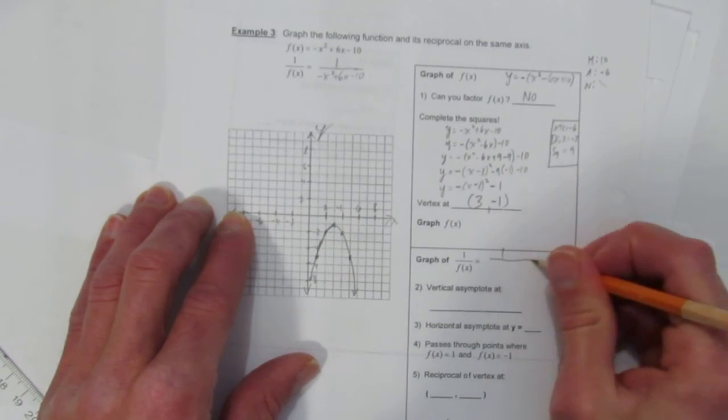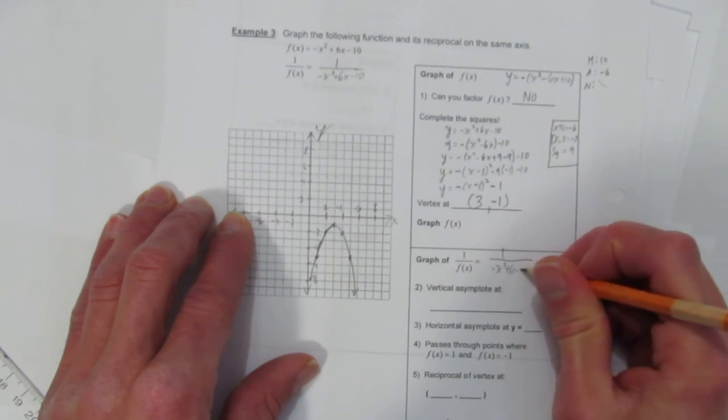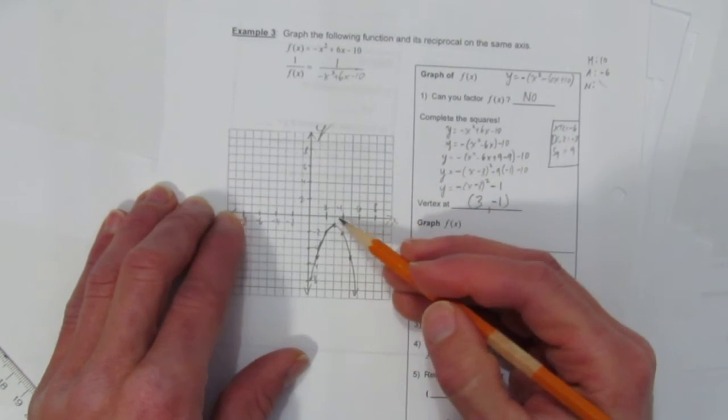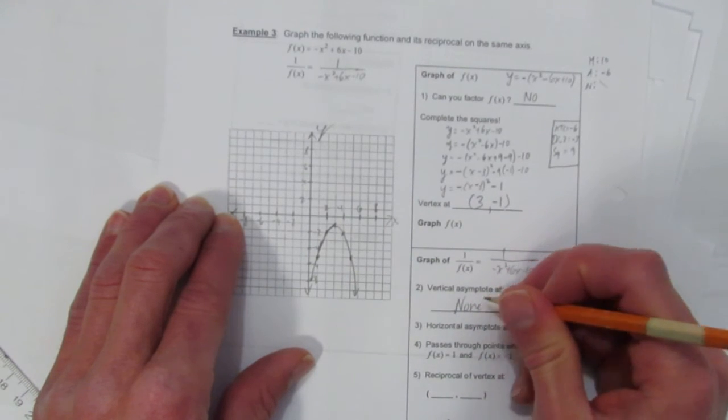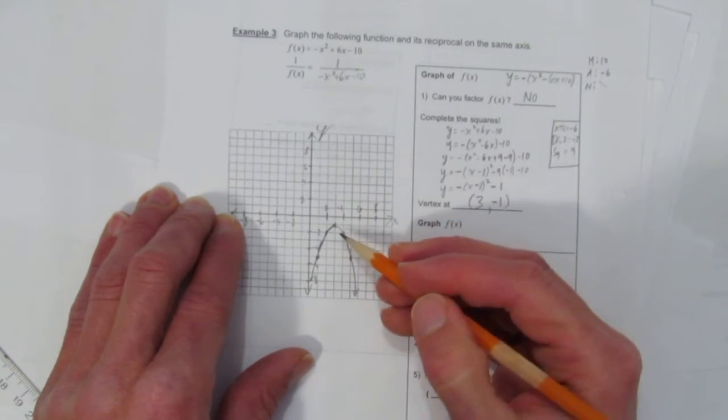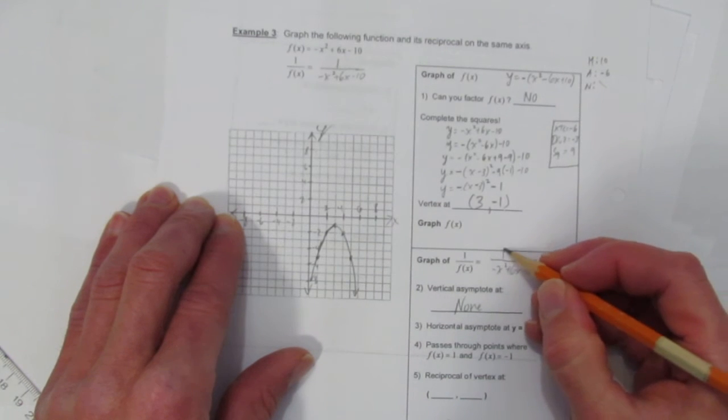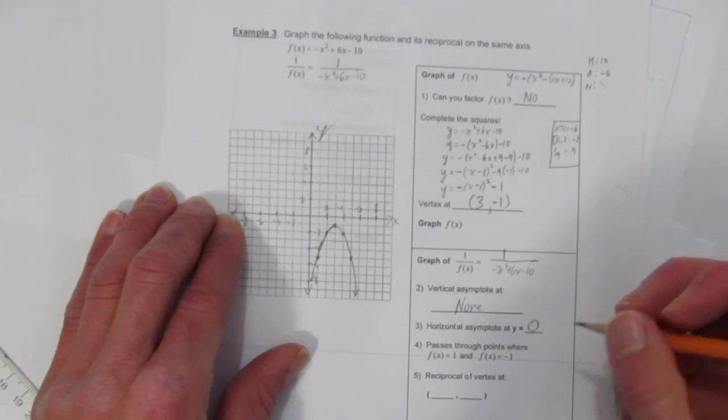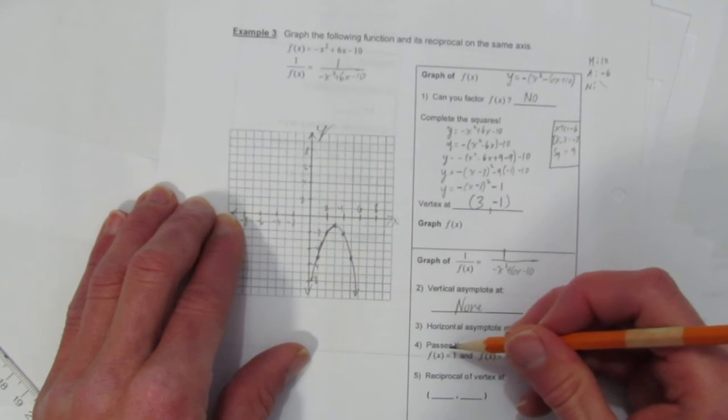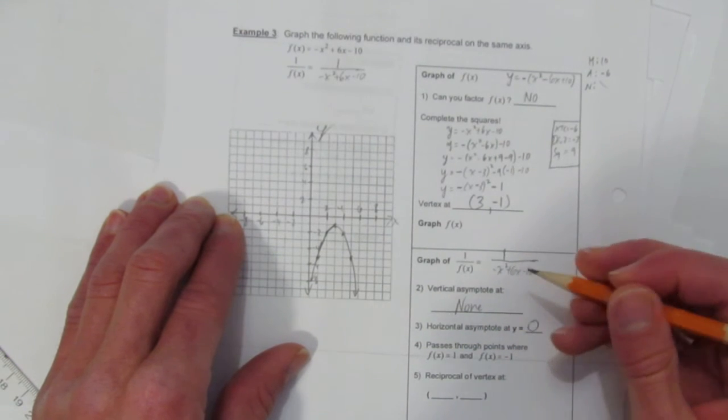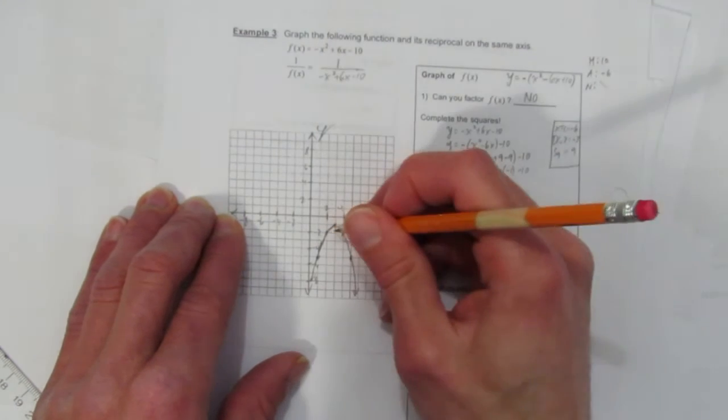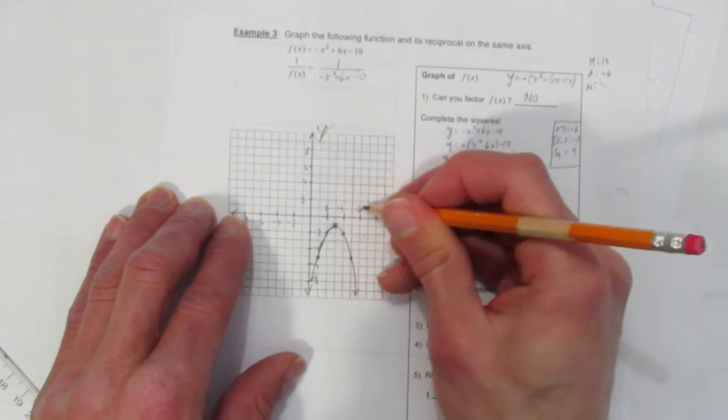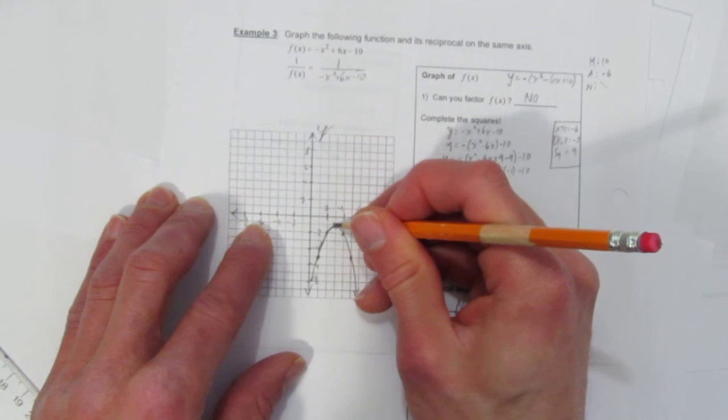So graphing the reciprocal, which is 1 over negative x squared plus 6x minus 10. There would be a vertical asymptote wherever this thing, original thing, had zeros. Look, it doesn't have zeros. So where's the vertical asymptote? There's none. Because there are no zeros for the original parabola. But all reciprocals, 1 over anything, has a horizontal asymptote at y equals 0. Also, wherever the original parabola has a y value of 1 or a y value of negative 1, that's a shared point. So this thing has a shared point right here at a y value of negative 1. Notice there's no y values of 1. There's only one spot where this parabola is at a y value of negative 1, right there.